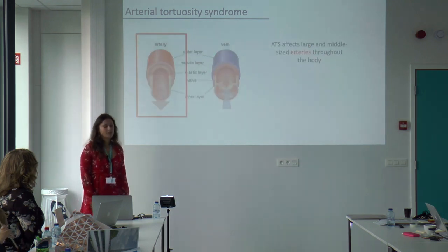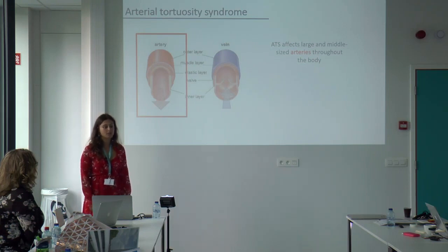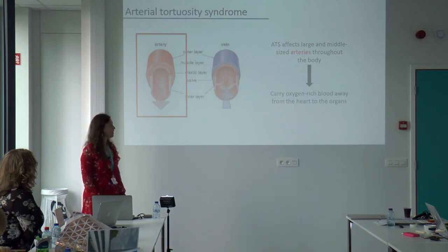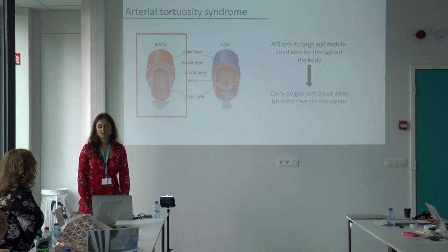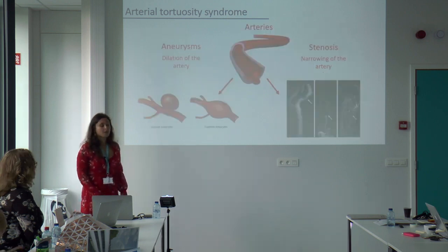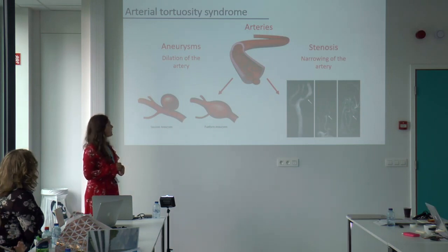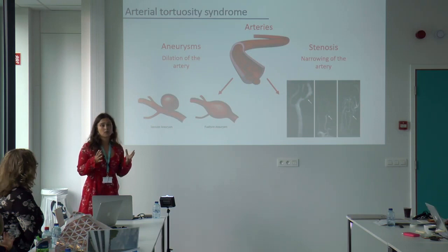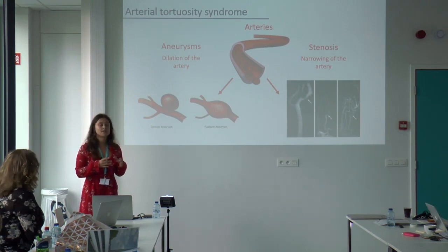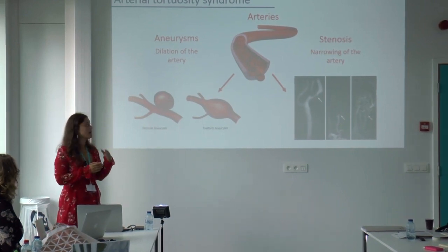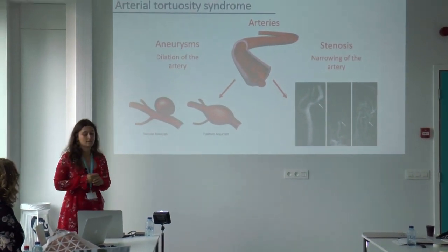Arterial tortuosity syndrome mainly affects the large and middle-sized arteries throughout the body. Arteries are the blood vessels that carry oxygen-rich blood away from the heart to all the different organs, so they are very important. Besides tortuosity, the arteries can also undergo other complications. They can become larger — dilatations, which we call aneurysms — but they also can become smaller, they can narrow, and then we call it stenosis, which you can see on the pictures.